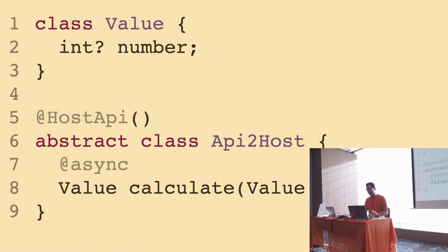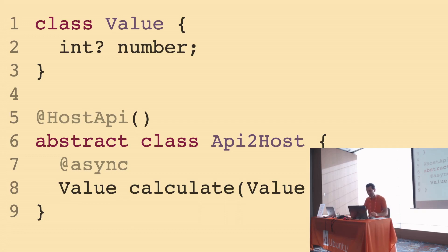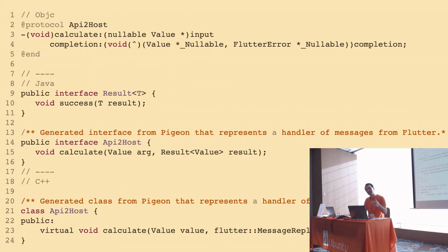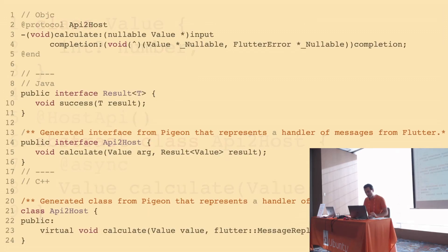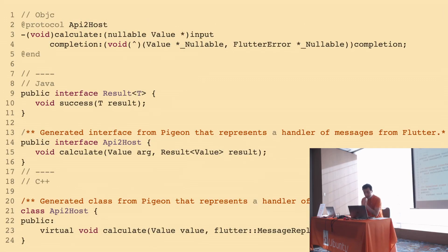Here's a quick example: imagine we have a custom class or type in Dart that we want to send to our host platform. With Pigeon, what we get is code generated specifically for what the host platform requires — something meaningful for that platform. This is an example of code generation for the same class shown in Dart. We can make way more complex types, which is most likely needed when you start building plugins.